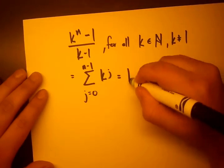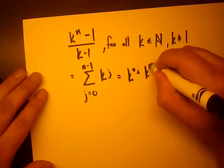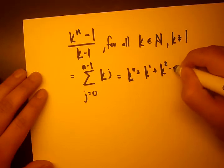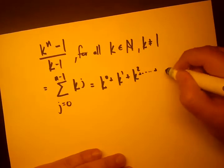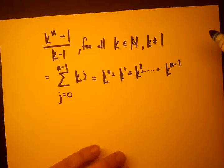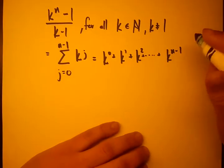And that's just writing k to the 0 plus k to the 1 plus k to the 2, dot dot dot, all the way to k to the n minus 1. And this is easy to prove, we can just use geometric series.